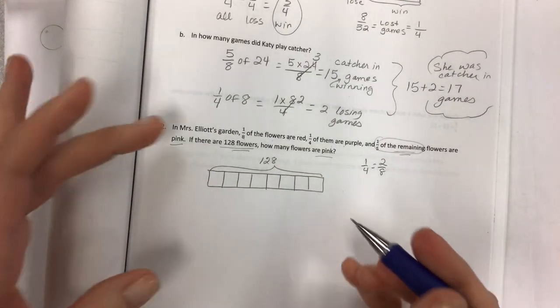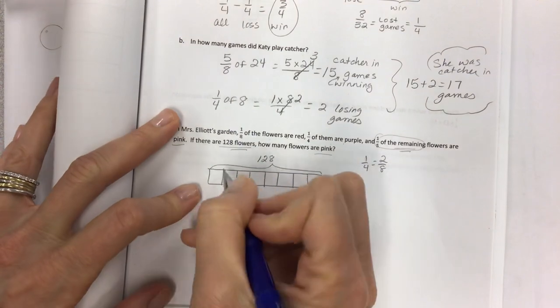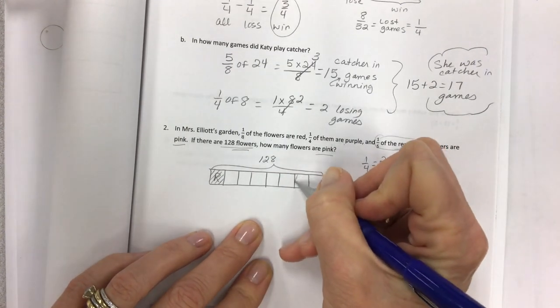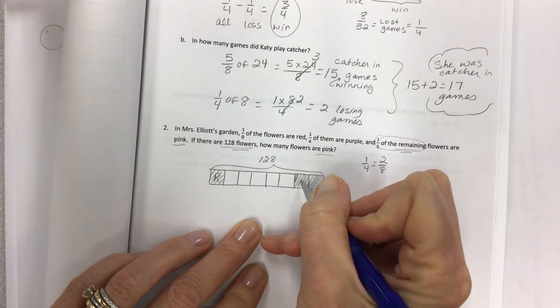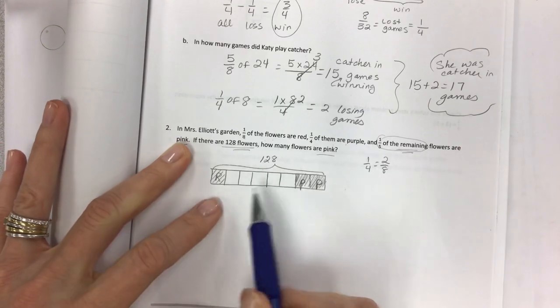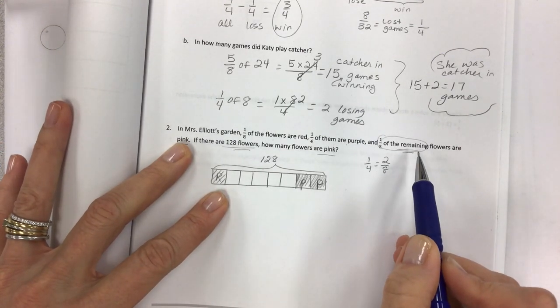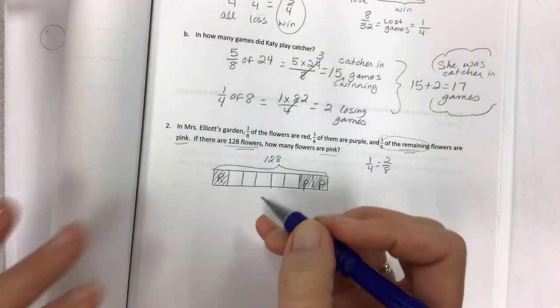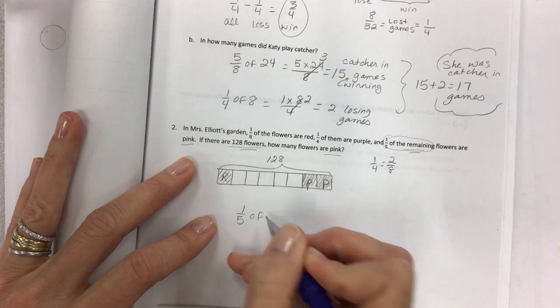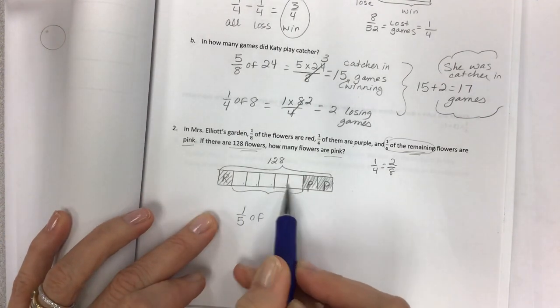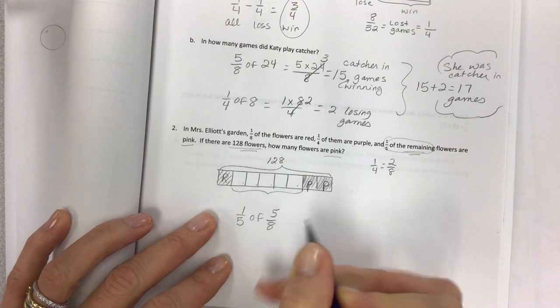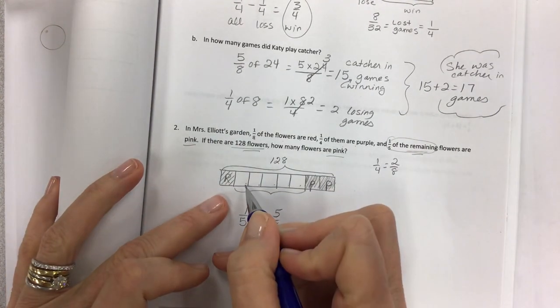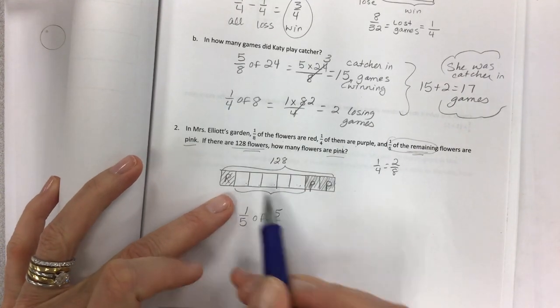1/8 of the flowers are red, 1/4 of them are purple. Let's just ignore the remaining part for a moment. 1/8 of all the flowers and 1/4 of all the flowers. If I make 1/4 into an equivalent fraction, then I can just section this off into 8 pieces and identify the reds and the purples. So 1/8 are red, and 1/4 are purple, but that means 2/8. One-fifth of the remaining flowers are pink. I have 1, 2, 3, 4, 5. One-fifth of 5/8.